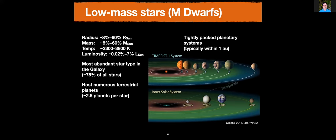Another important aspect of these planetary systems is that they're all orbiting close to their host star. Here I'm showing you probably the most famous system around a low mass star: TRAPPIST-1. All seven of its known planets orbit their host star closer than Mercury orbits the Sun. In general, all terrestrial planets around low mass stars orbit closer than 1 AU — the distance from the Earth to the Sun. So these are very compact, tightly packed systems.